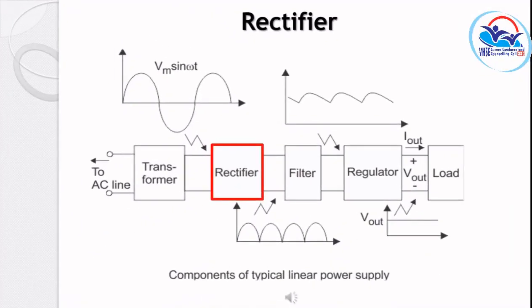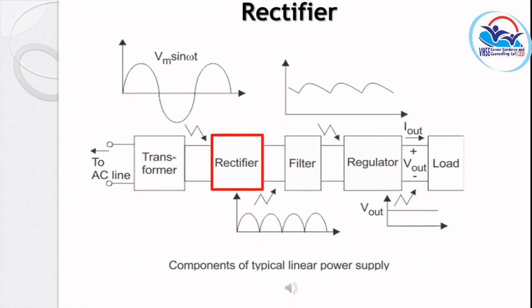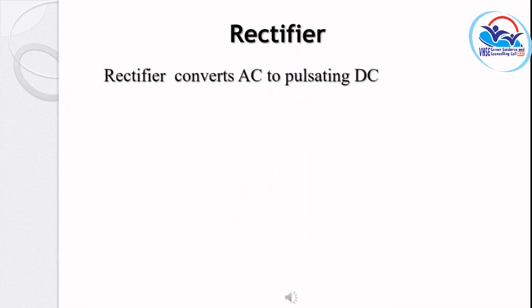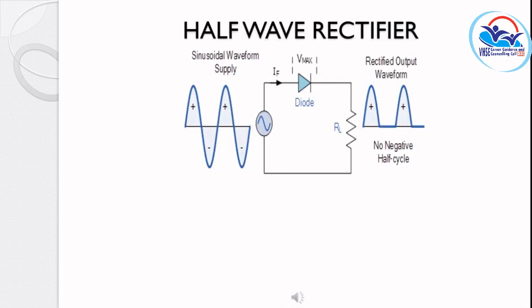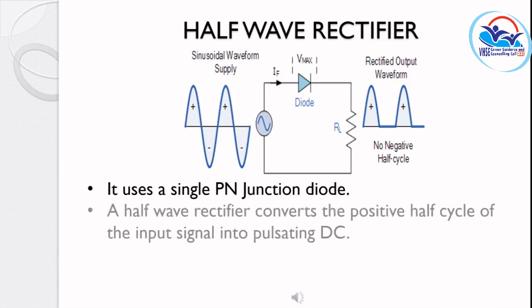The next section of the DC power supply is the rectifier circuit. A rectifier converts AC into pulsating DC. Types of rectifiers include the half-wave rectifier and the full-wave rectifier. A half-wave rectifier uses a single PN junction diode. It converts only the positive half-cycle of the input signal into pulsating DC. During the positive half-cycle, the diode is forward biased.